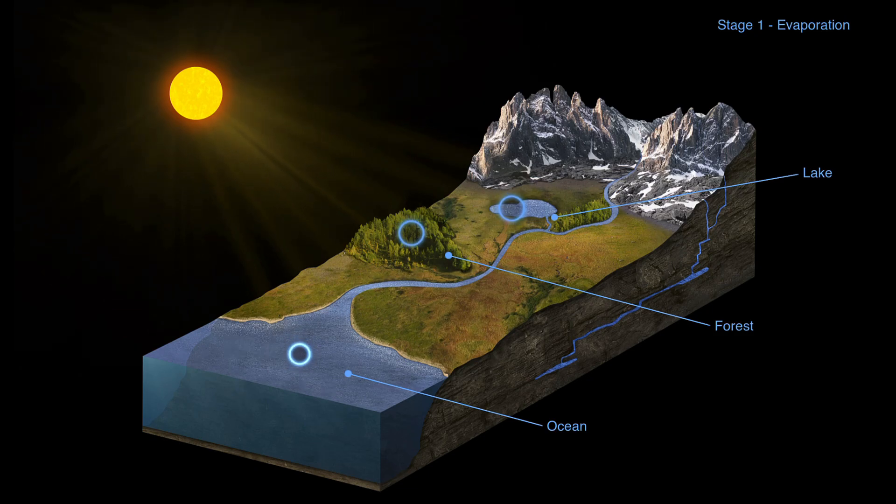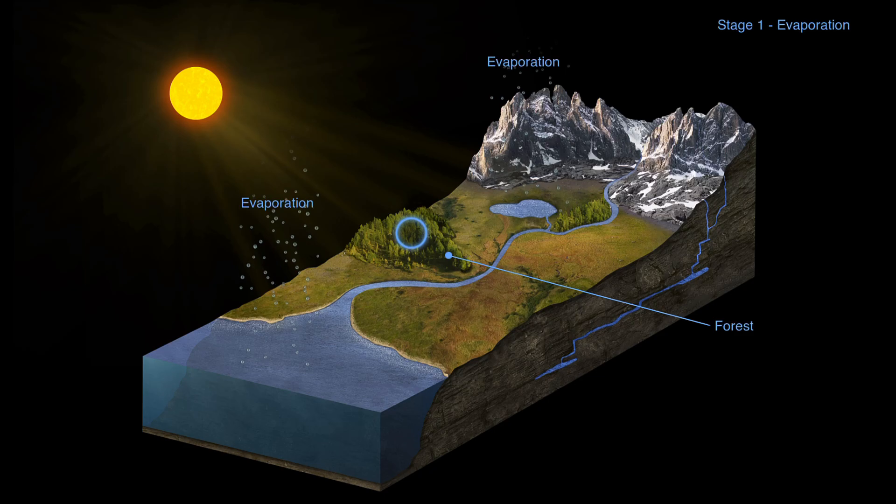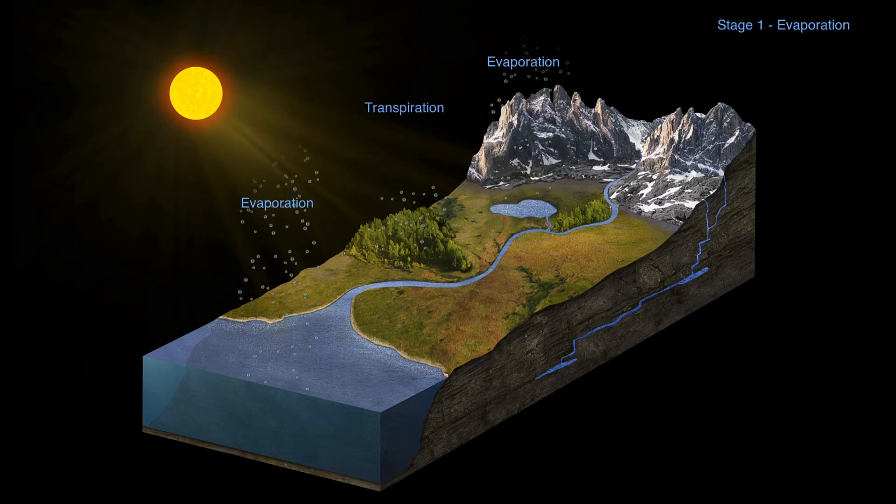This is happening constantly in the oceans around the world, as well as all of the lakes and other sources of fresh water on the land. This is adding millions and millions of gallons of water vapor to the atmosphere at any given time. In addition to evaporation from bodies of water on Earth, we also see water being released by plant life through the process of transpiration.